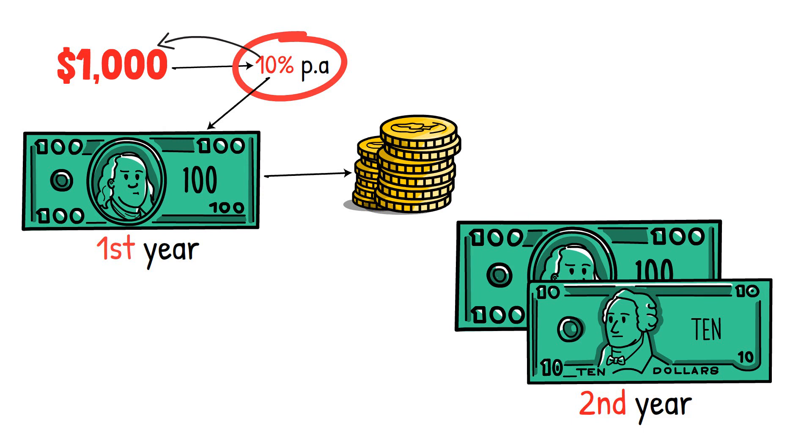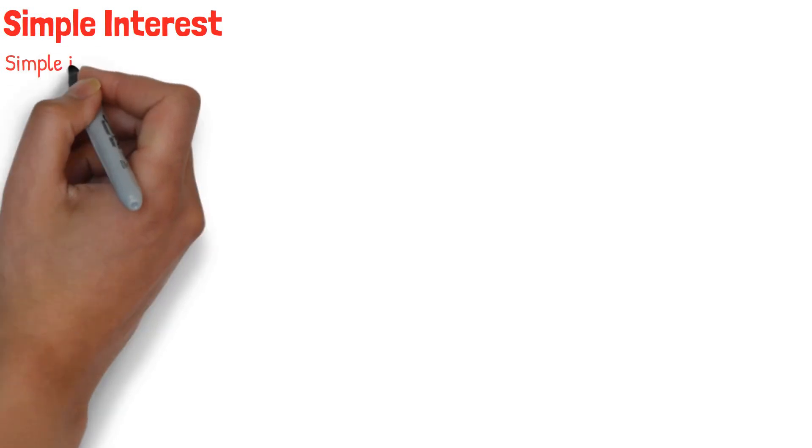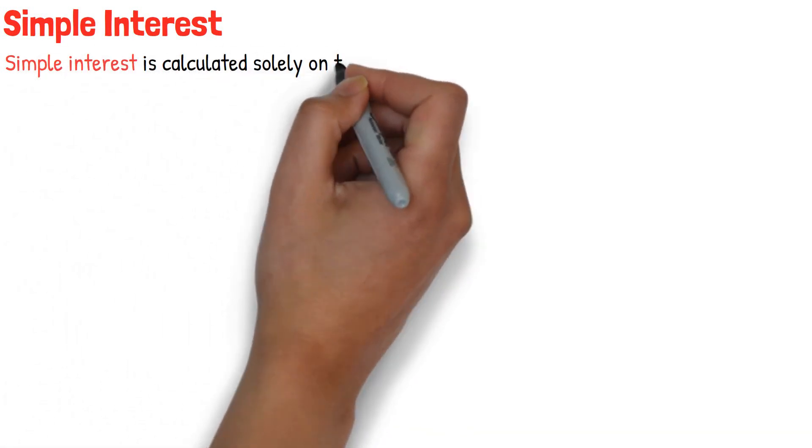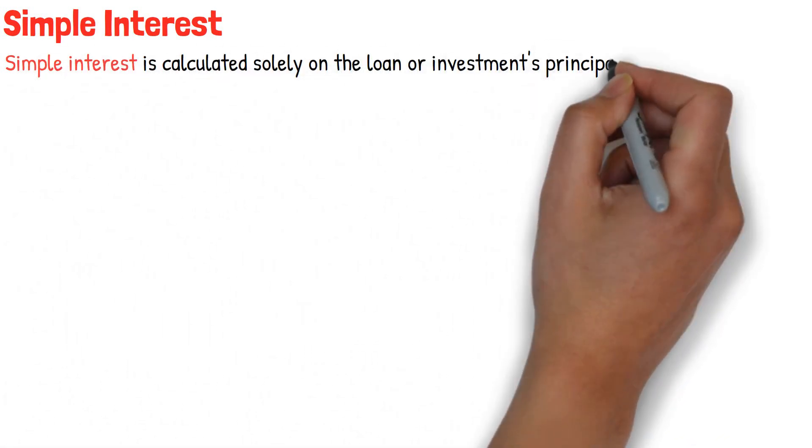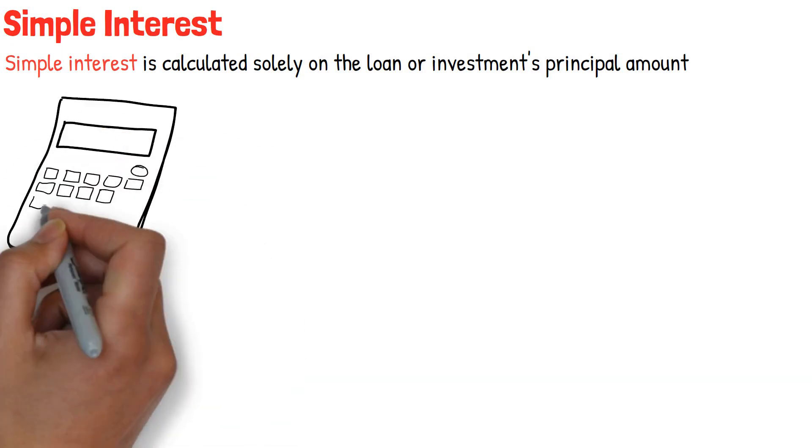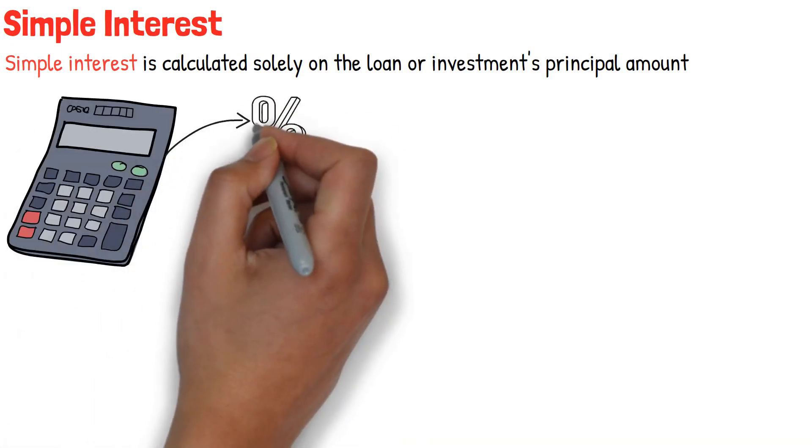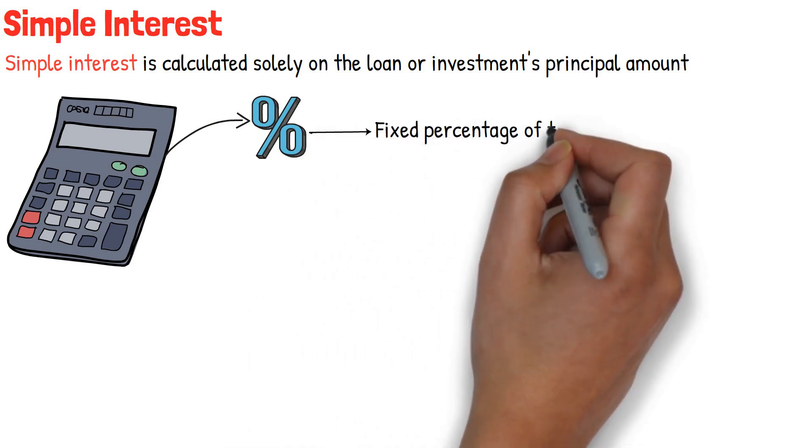To put it simply, here are the differences between simple interest and compound interest. Simple interest is calculated solely on the loan or investment's principal amount. It is a linear calculation in which the interest earned or owed is expressed as a fixed percentage of the original principal amount.